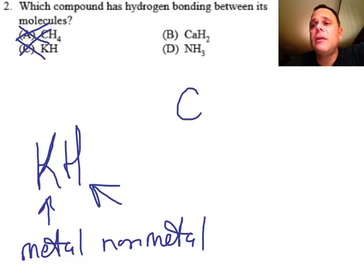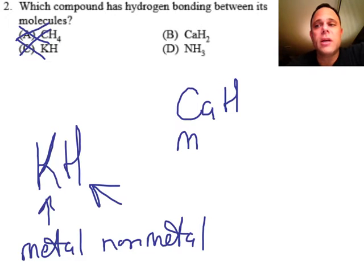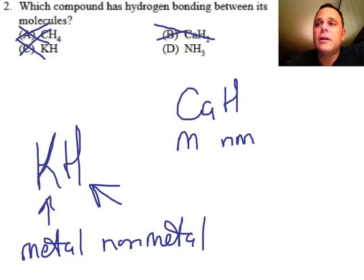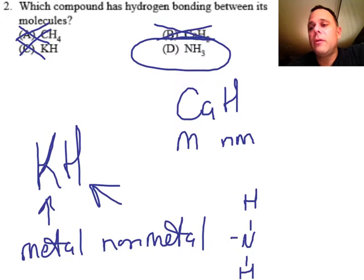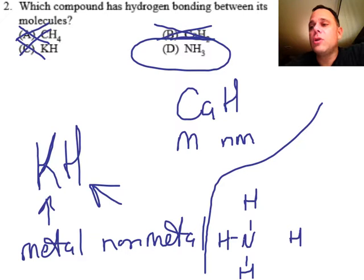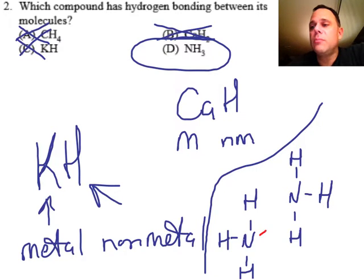Calcium hydride — again, calcium is a metal and hydrogen is a nonmetal, so that's an ionic bond; it's not going to happen there. The answer is choice D. The hydrogen of one molecule and the nitrogen of a different molecule can interact with each other, forming hydrogen bonds. So the answer is D.